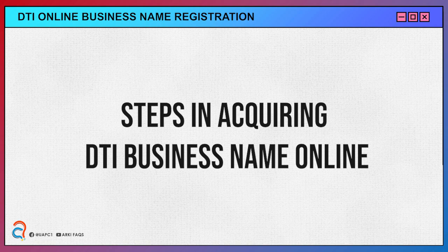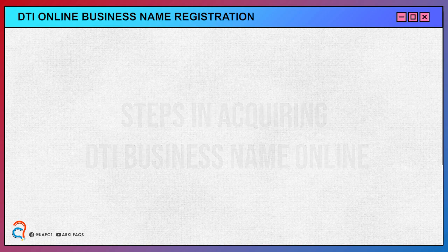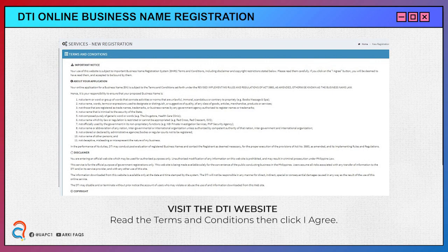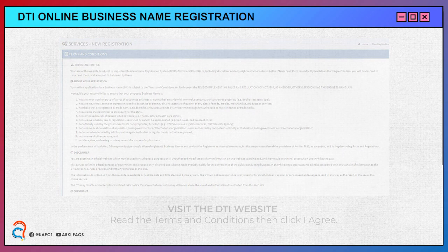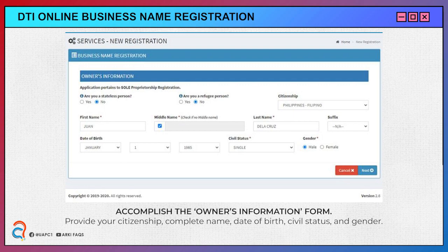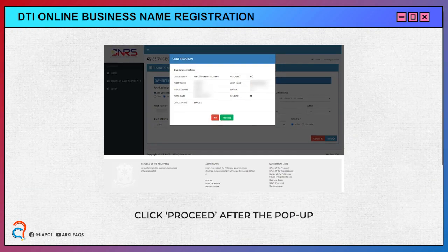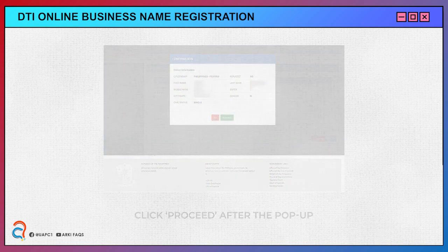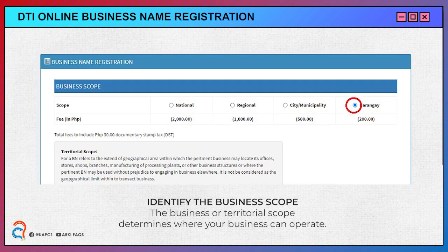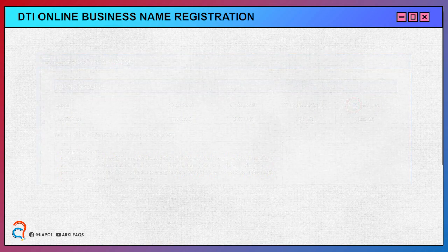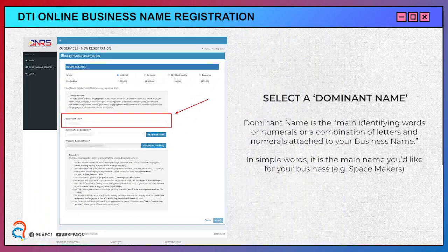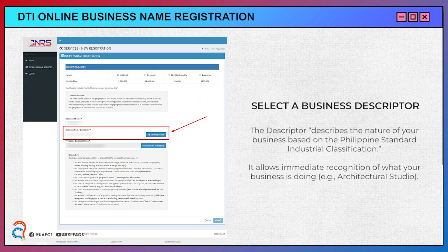Steps in acquiring DTI business name online. First, visit the DTI website. Accomplish the owner's information form. Click Proceed after the pop-up. Identify the business scope. Select a dominant name, then select a business descriptor.